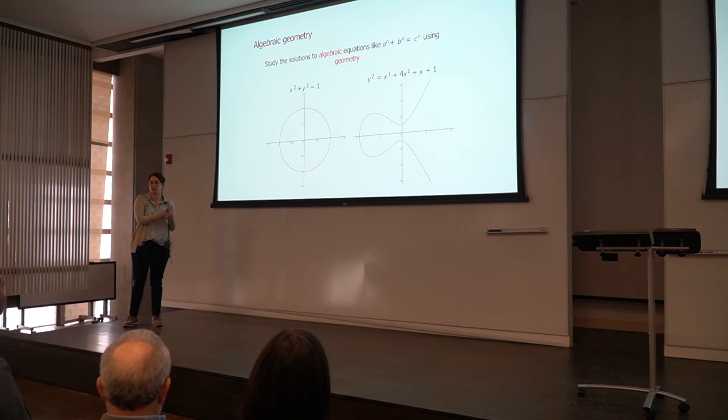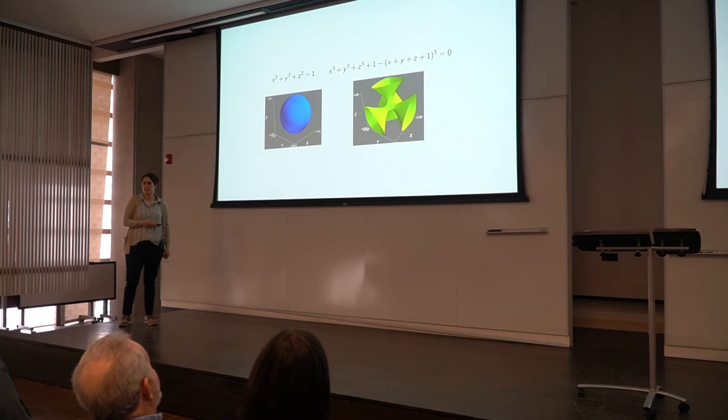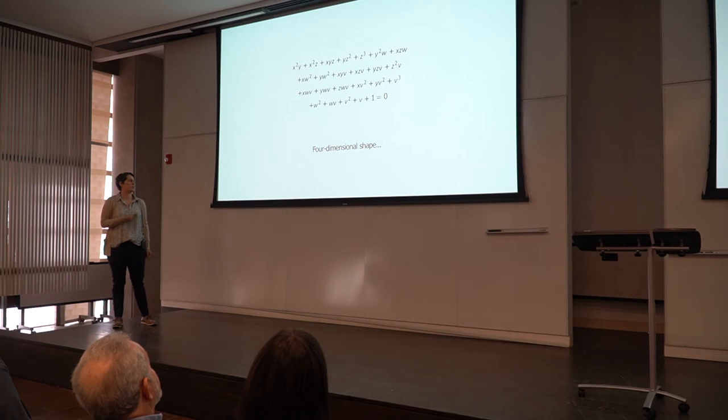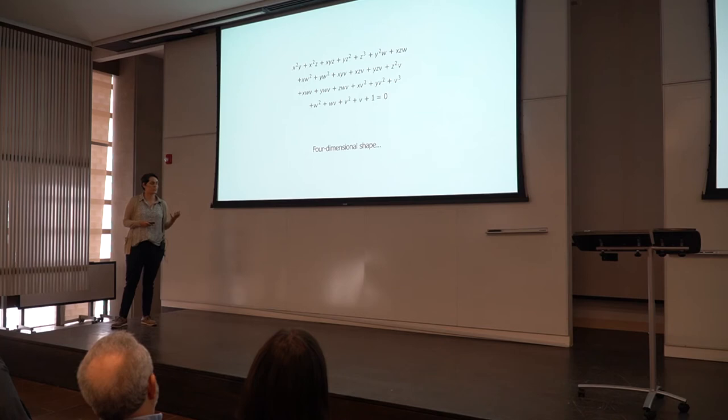Now, if I look at other equations, I can get things like surfaces, two-dimensional objects. If I make the equation more complicated, the corresponding geometric object also gets more complicated. And if I add more variables to the equation, now the geometric object lives in four dimensions. So I can no longer draw it. So you can imagine these things get very complicated very quickly.